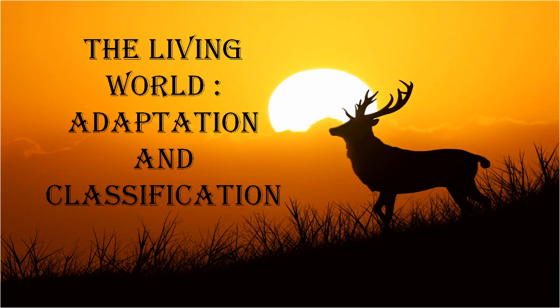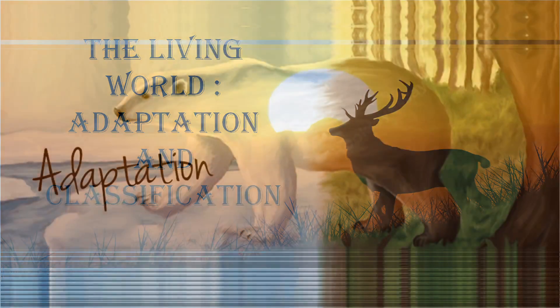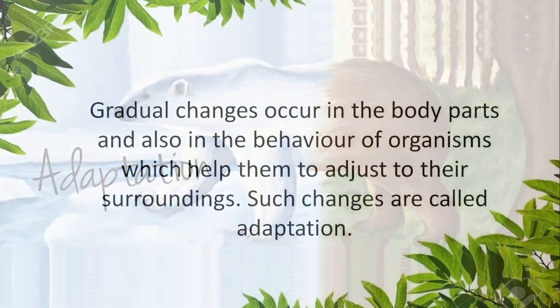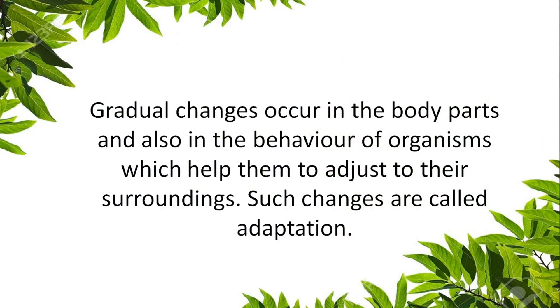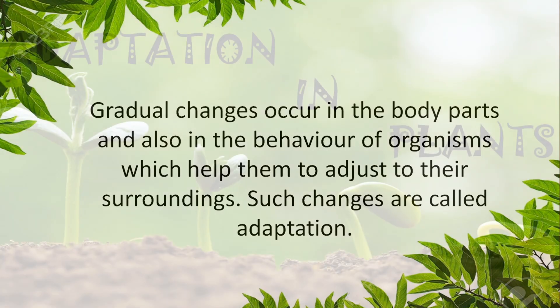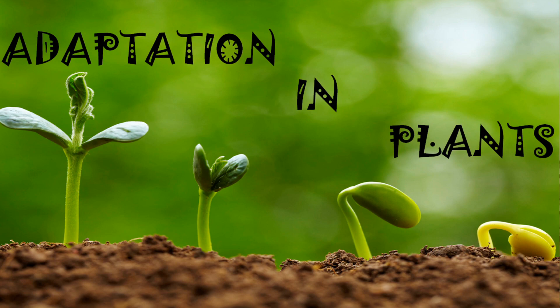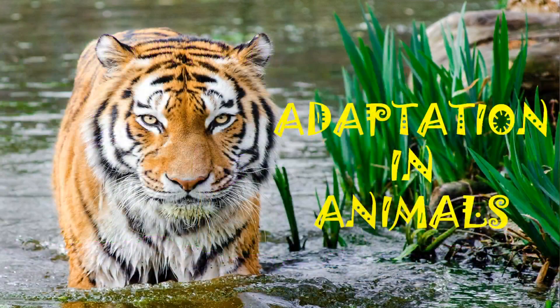Good day everyone. Today we are going to learn more about the chapter adaptation and classification of living things. Towards the end of this chapter, the answers for the textbook back questions are also given. In the previous video, we have learnt about the meaning of adaptation. When the body parts and also the behavior of an organism changes so that they can adjust with their surrounding, it is called adaptation. We have already studied in depth about adaptation in plants and in animals. Today we are going to focus on classification.